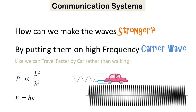We can make the waves stronger by putting them on high frequency carrier waves — just like we can travel much faster by car rather than walking. The energy of a wave is directly proportional to its frequency and inversely proportional to its wavelength. So the trick is to put these waves on high frequency carrier waves.